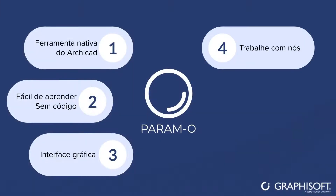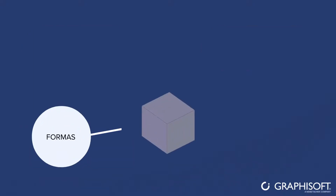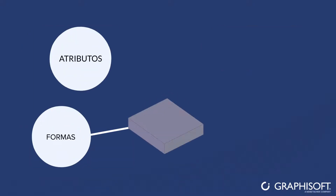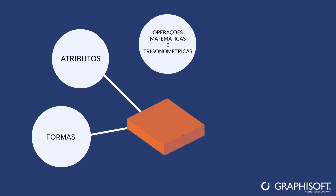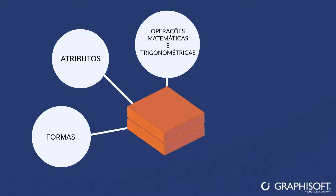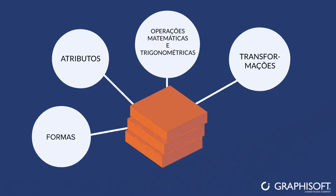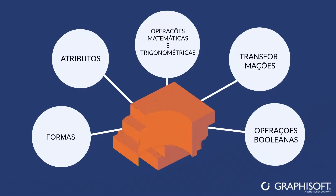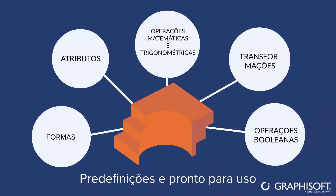Play with boxes called nodes — these are the basic Paramo building blocks. There are many types of nodes, such as shapes, attributes, mathematical and trigonometric operations, transformations, and boolean operations. Many of them are predefined and ready to use.